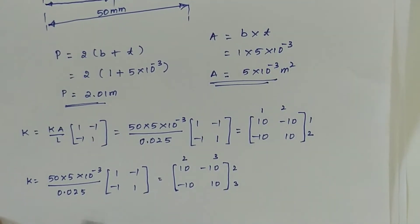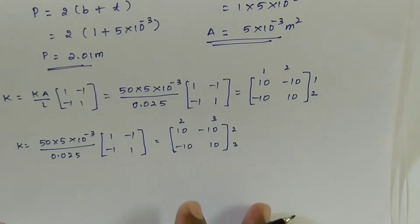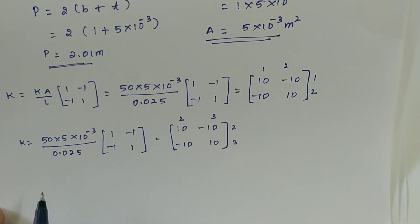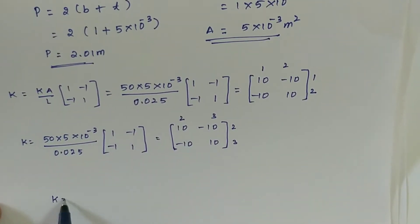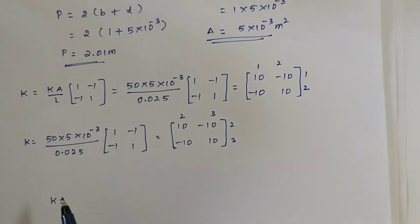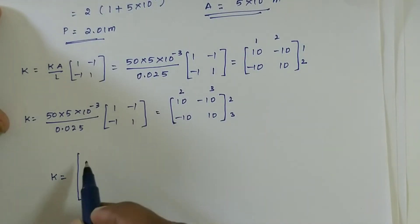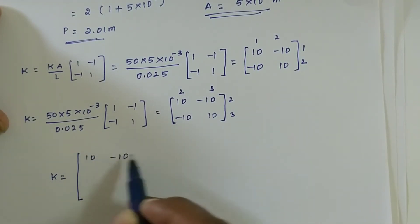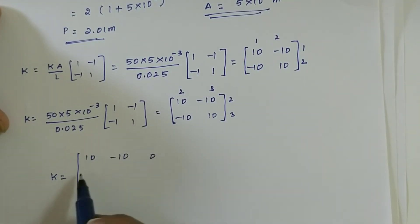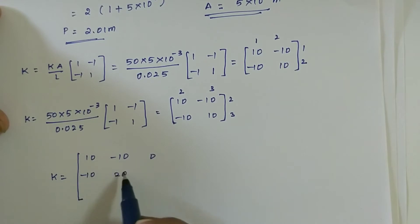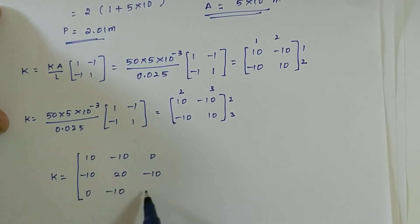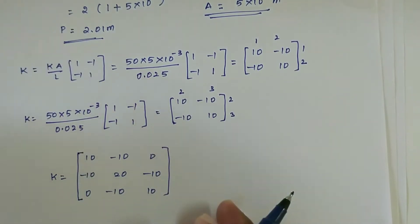The global thermal conductivity matrix K can be assembled from the two element matrices.